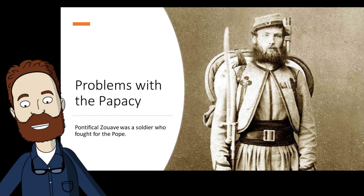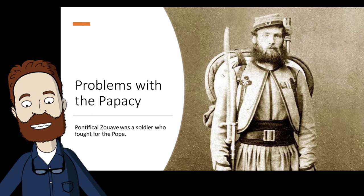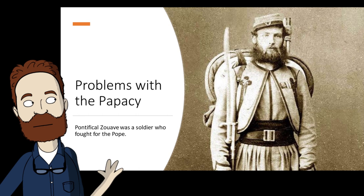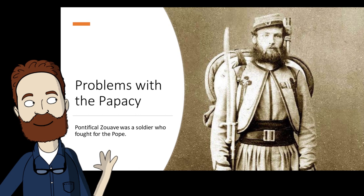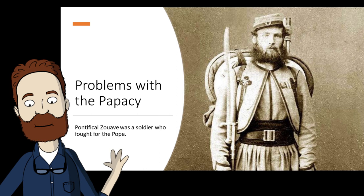There were continual problems with the papacy, and it wasn't until 1929 that a formal agreement would be reached. Until then, most popes shut themselves up in the Vatican and refused to have anything to do with the new Italian government. They had been granted independent status within the Vatican and surrounding buildings, along with other concessions from Victor Emmanuel, but the bitterness was too great for about 60 years. In this image, you're seeing a Pontifical Zouave — a soldier who fought for the Catholic Church and the Pope.